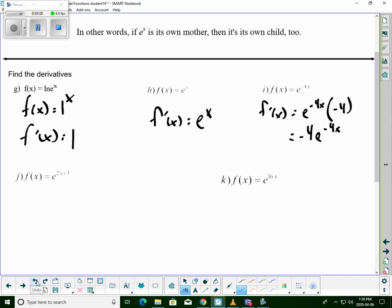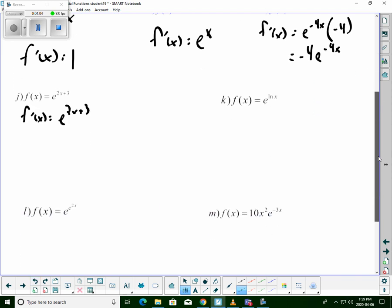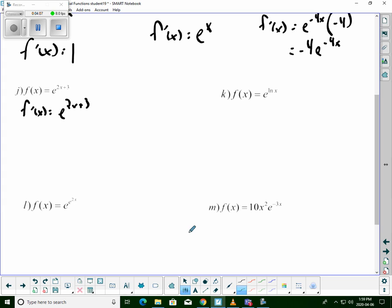So, next one, f of x is equal to e to the 2x plus 3, just like before. The derivative part starts with the same thing, but then you've got to go in the exponent. So derivative of 2x plus 3, well, that would just be 2. So, then it's got to rewrite it with the 2 in front.